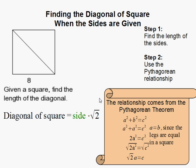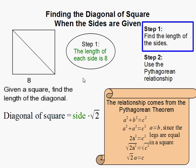How to find the diagonal of a square when the sides are given. In this problem, we're given that the length of each side of a square is 8.